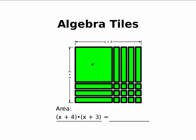If we look at the pieces, I've got an x squared, 1, 2, 3, 4, 5, 6, 7 x's, and 1, 2, 3, 4, 5, 6, 7, 8, 9, 10, 11, 12 ones. So we write that x squared plus 7x plus 12.